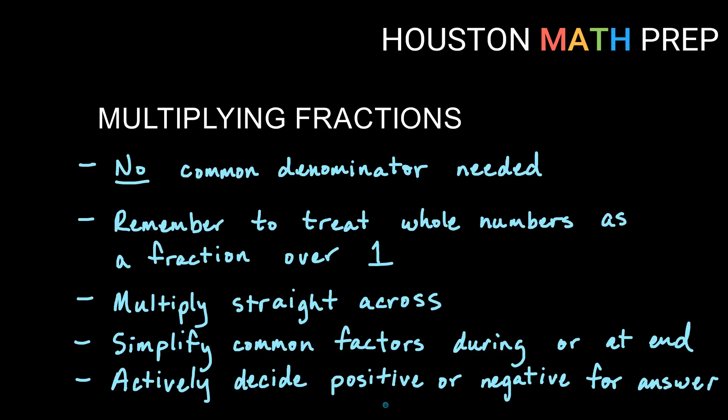Whole numbers, you got to treat them as something over 1. 9 is 9 over 1. 10 is 10 over 1. It's easy. You just multiply straight across. You go with your intuition there. Of course, we want to simplify. Really, I would say at the same step in each time you do any multiplying of fractions, actively decide, is it going to be positive because the signs are the same, whether they're both positive or both negative, or is the answer going to be negative because I'm dealing with one positive and one negative number multiplied together.